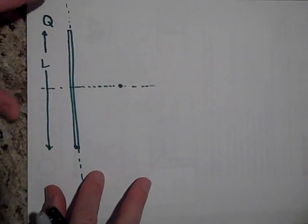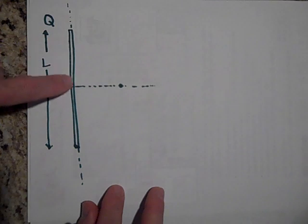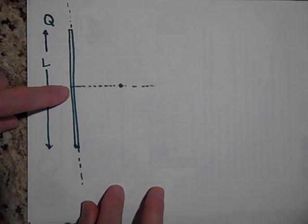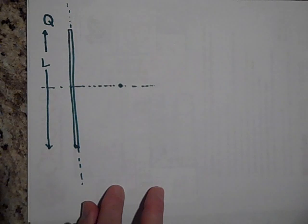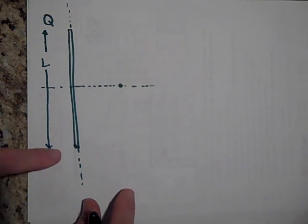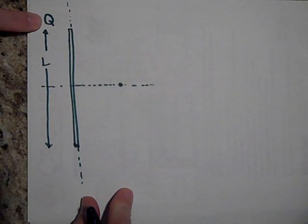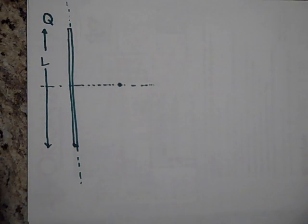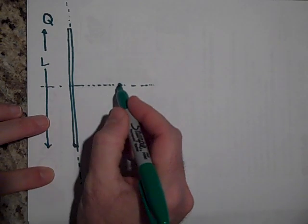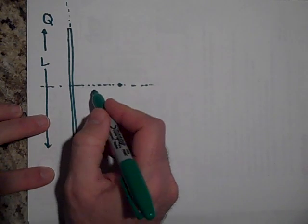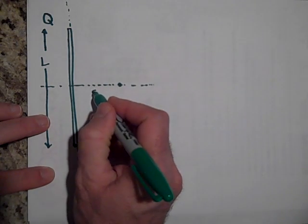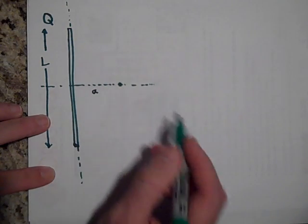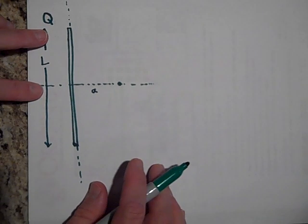You have this uniform wire centered at the origin of a coordinate system. It's got a length L, it's got a charge Q, and it's positively charged. We want to know the electric field at a particular point distance a away from the center.